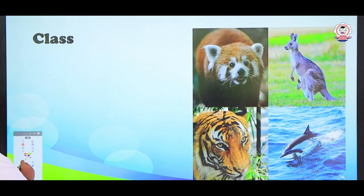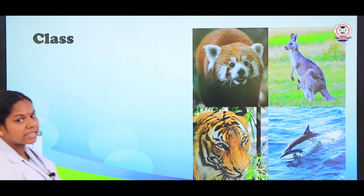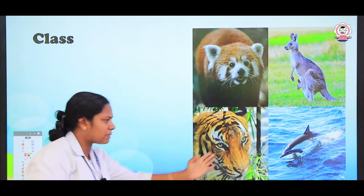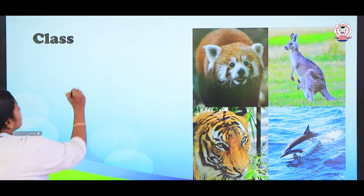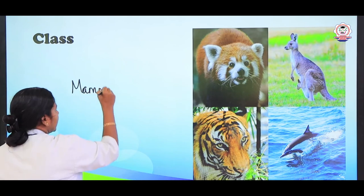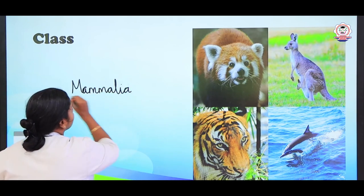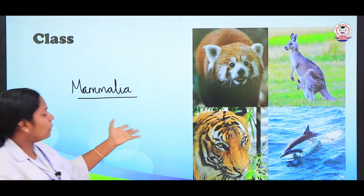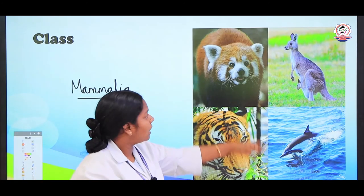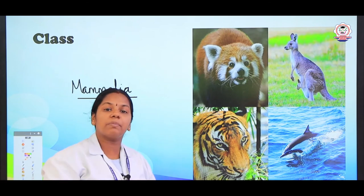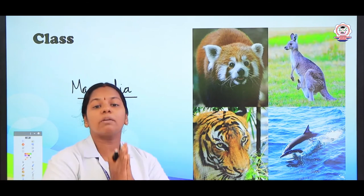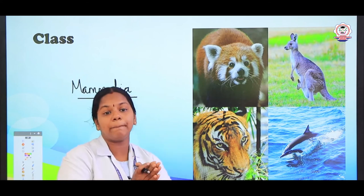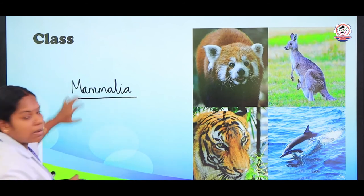The next higher level of order: several orders join together to form a class. For example, all these animals belong to the class Mammalia. Even we human beings also belong to Mammalia. It is named Mammalia because they possess mammary glands. Cartilaginous fish, whale, kangaroo, tiger, human beings, and monkeys — we are all placed under the same class Mammalia, since we belong to different orders but the same class.